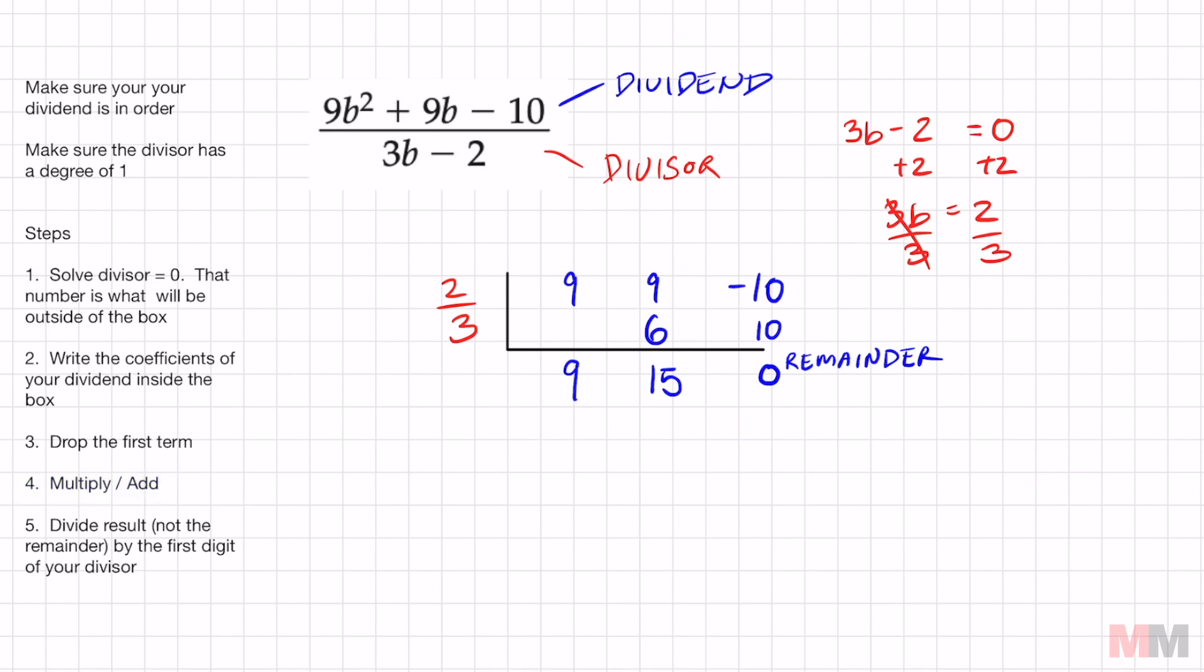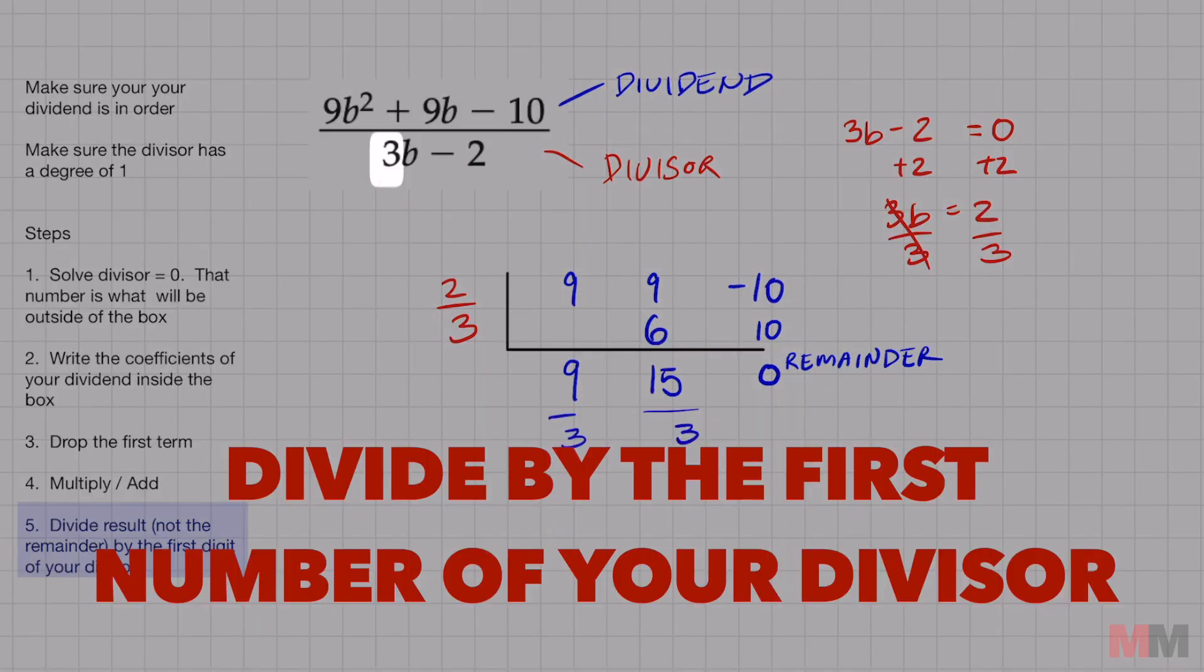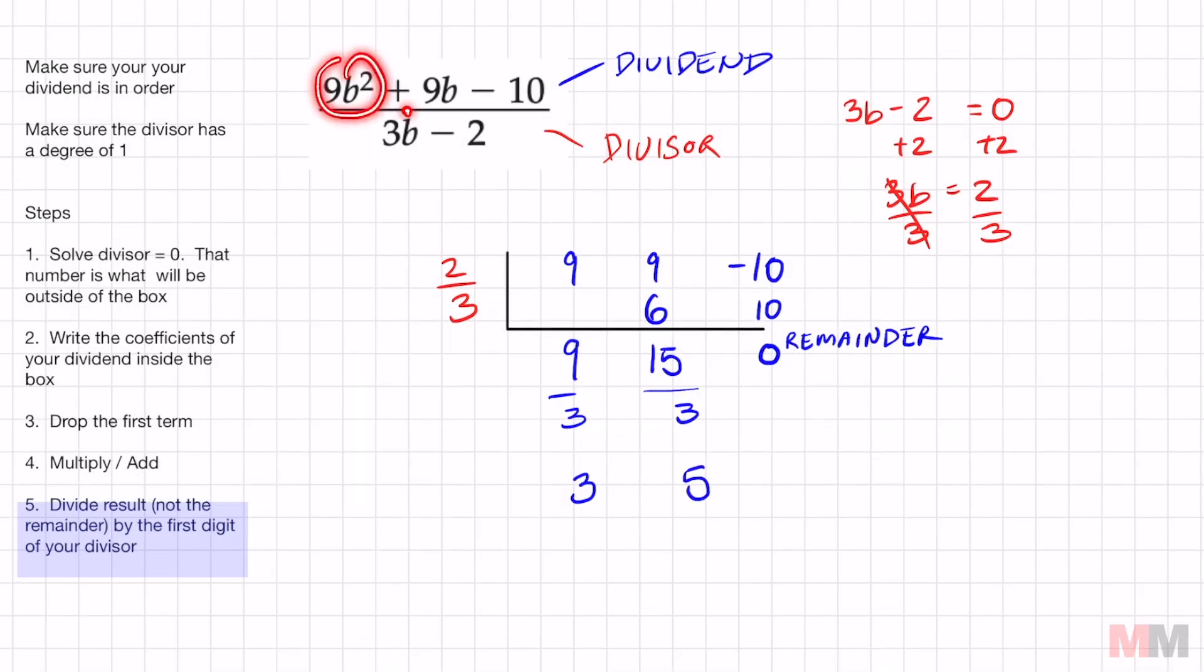Step number five. Divide your result. So I'm going to divide this 9 and 15, not the remainder though, just this 9 and 15 by the first number of my divisor by 3. I end up getting 3 and 15 over 3 is 5. 9b squared divided by 3b is 3b. So my leading term is going to have b and this next term will just be plus 5.